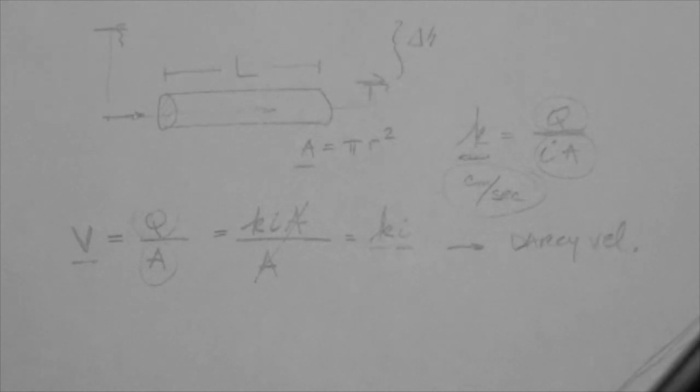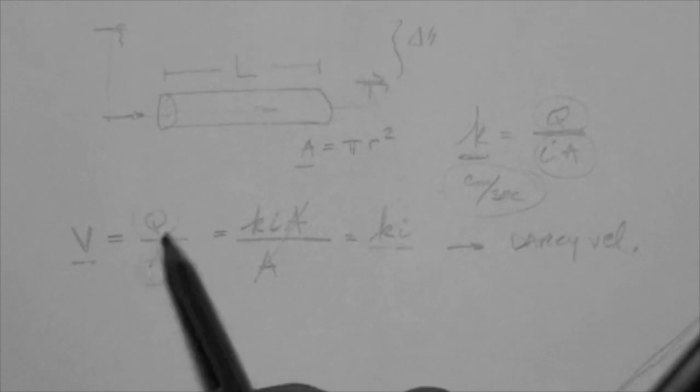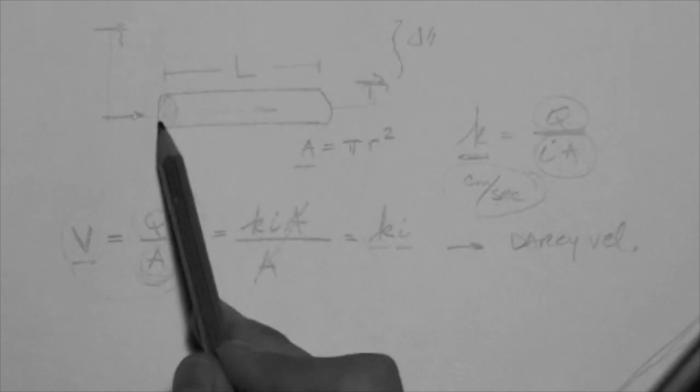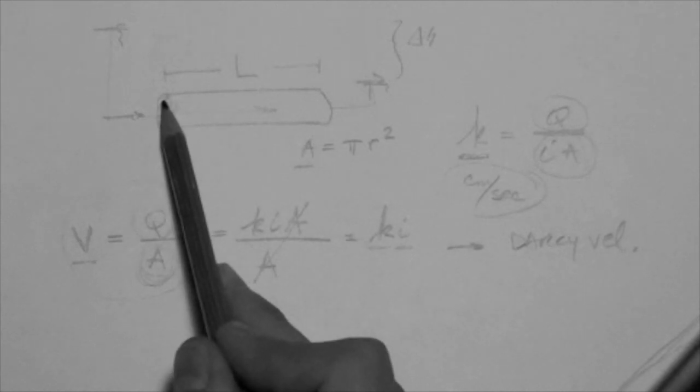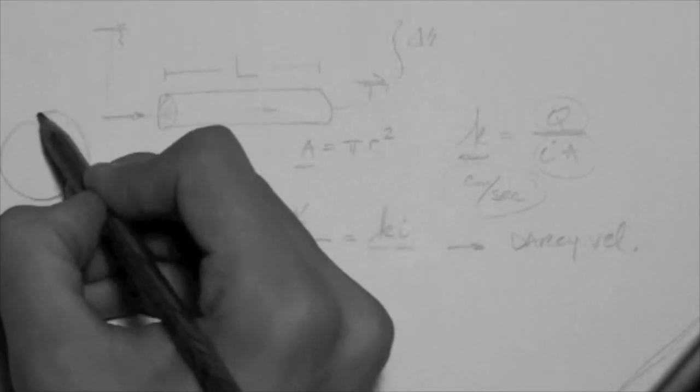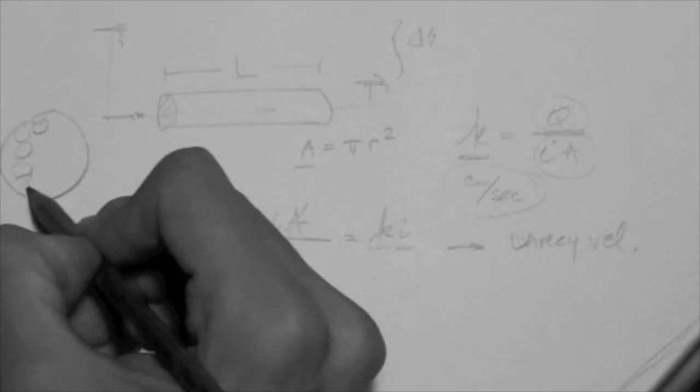Do you see any problem with this velocity? Does it really capture the flow of the fluid through the soil? You can press pause at this time and think about it. And now we're going to answer. There is something weird with this velocity, and the reason is that the area that we use, remember this is the definition of a tube, the area, which is the area of this cylinder or tube, is the total area.